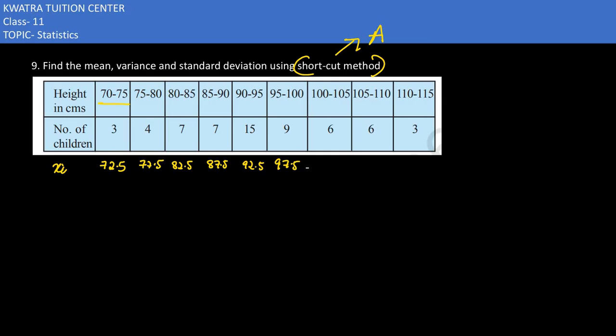Next, 95-100 gives you 97.5. Then 100-105 gives 102.5. Next you have 105-110, which is 107.5. The next value is 110-115, which gives 112.5.